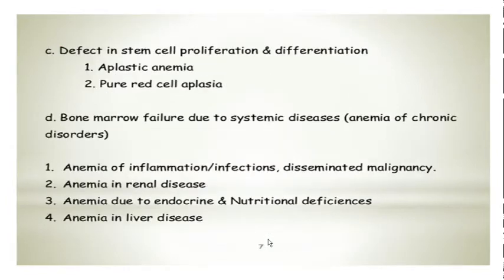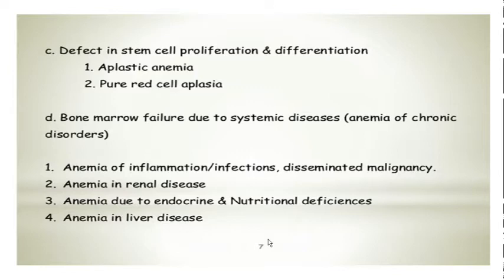Then there is defect in stem cell proliferation and differentiation, which is basically aplastic anemia and pure red aplasia, where the defect is with the bone marrow — ineffective erythropoiesis. Then bone marrow failure due to systemic diseases like anemia of chronic disorders, which can be further classified under anemia of inflammation or infection, anemia in renal diseases or chronic renal failure, and anemia due to endocrine alone.